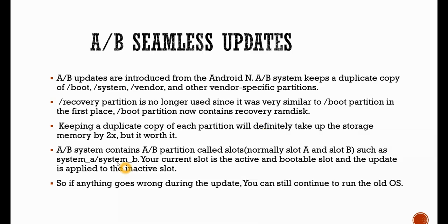It's really worth it because the AB system contains AB partitions called slots, such as system A and system B. Your current slot is the active and bootable slot, and the update is applied to the inactive slot. If anything goes wrong during the update, you can still continue to run the old operating system. In non-AB, if anything goes wrong the device will break and cannot be recovered. To overcome that issue, AB updates were introduced. With two partitions, one partition contains the old image and the current OS, while we flash the other partition. If anything goes wrong, we always roll back to our current partition.